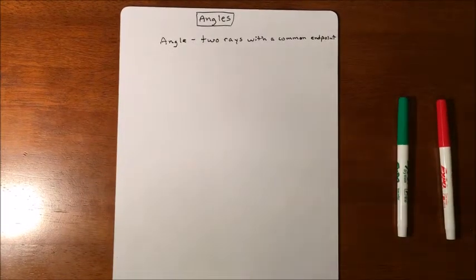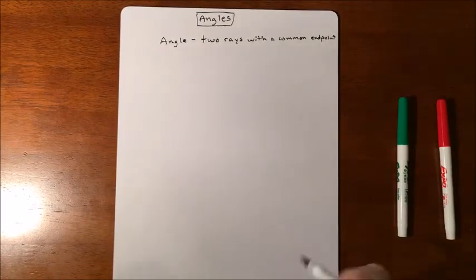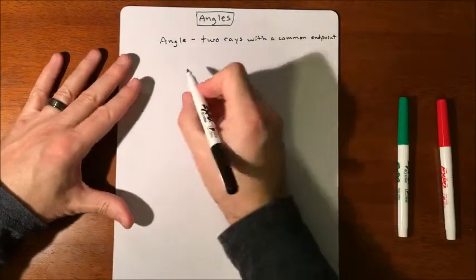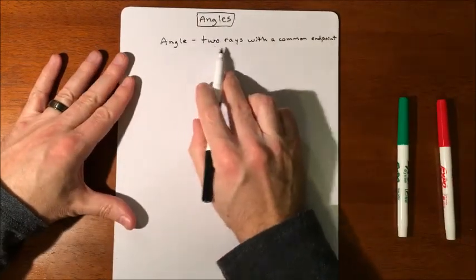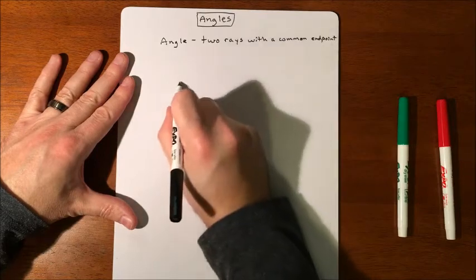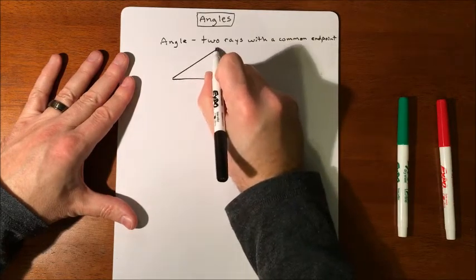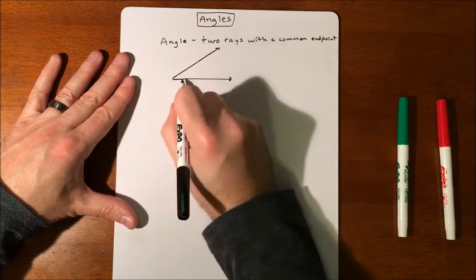In this lesson, we're going to talk about angles, and we're going to be categorizing the angles. So first off, an angle is two rays with a common endpoint. So visually, you have something like this.